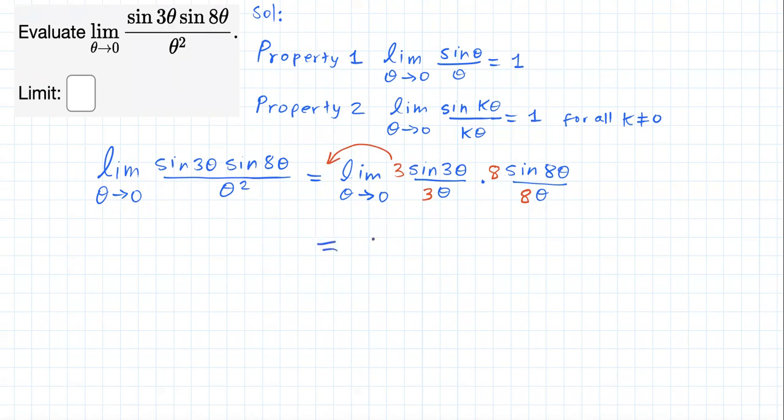So what we're going to have after we distribute the limit over and we take out our constant is the following: three times limit as theta approaches zero of sine of three theta over three theta, times—remember we're distributing the limit over the factors—the limit of this part.